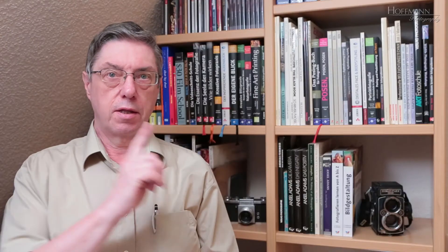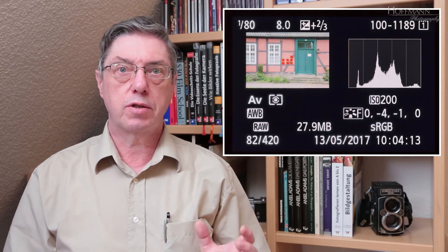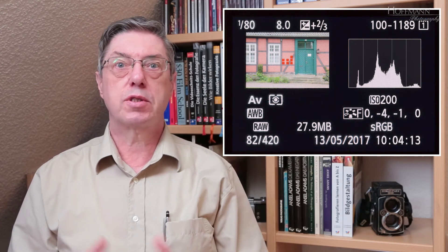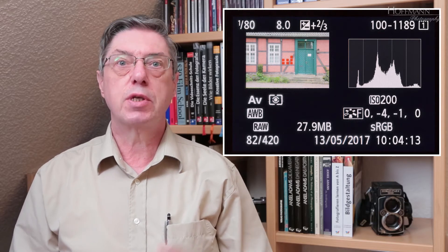This is where the histogram comes in handy. Since the histogram is a mathematical representation of the tonal values in an image, it is completely independent of lighting conditions and the brightness settings of the display. This is how the histogram looks on Canon cameras. On your camera it will probably look differently, but the general appearance should be roughly the same. So let's have a closer look at the histogram.